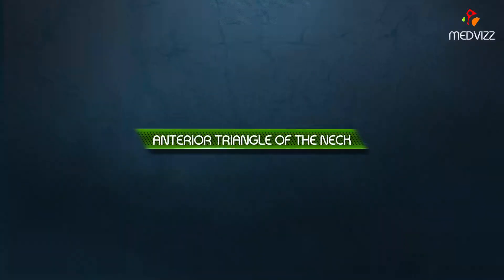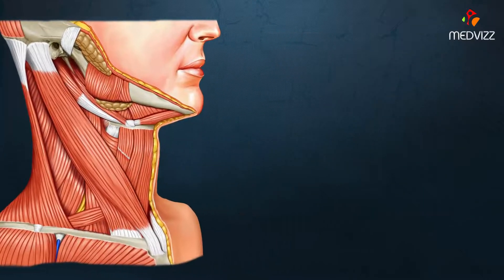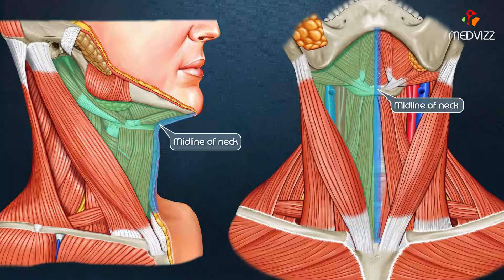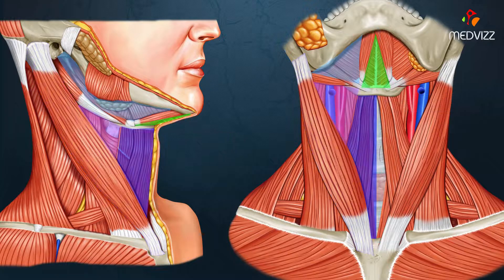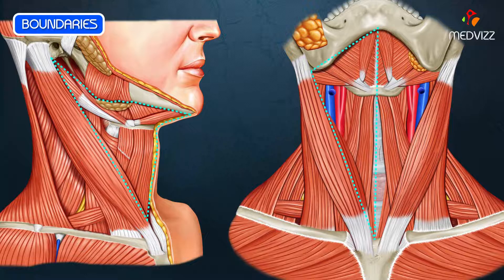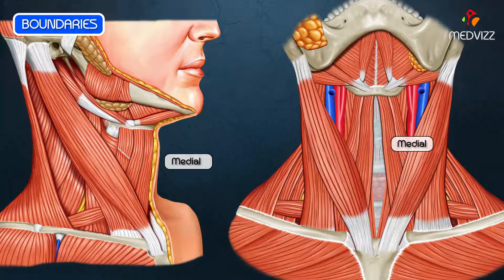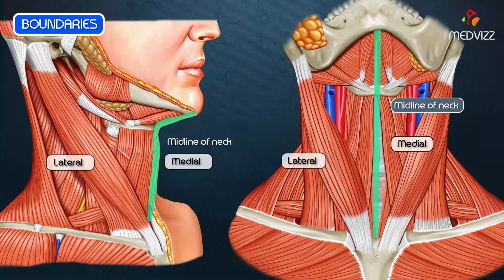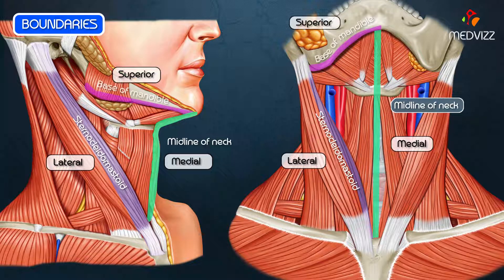Let us discuss the anterior triangle of the neck. The anterior triangle of the neck lies between the midline of the neck and the sternocleidomastoid muscle, and it is further subdivided into smaller triangles. It has three boundaries: the medial boundary is formed by the anterior median plane, the lateral boundary is formed by the sternocleidomastoid muscle, and the superior boundary is formed by the base of the mandible and the line joining the angle of the mandible to the mastoid process.